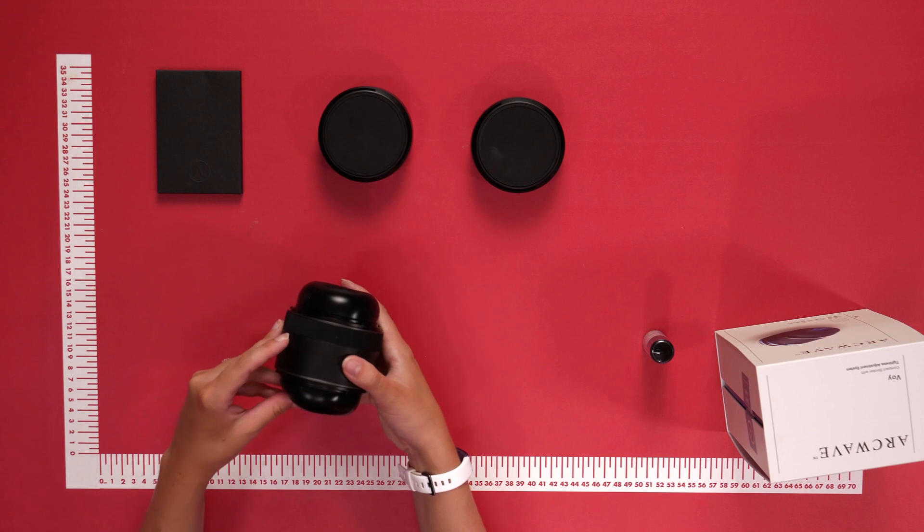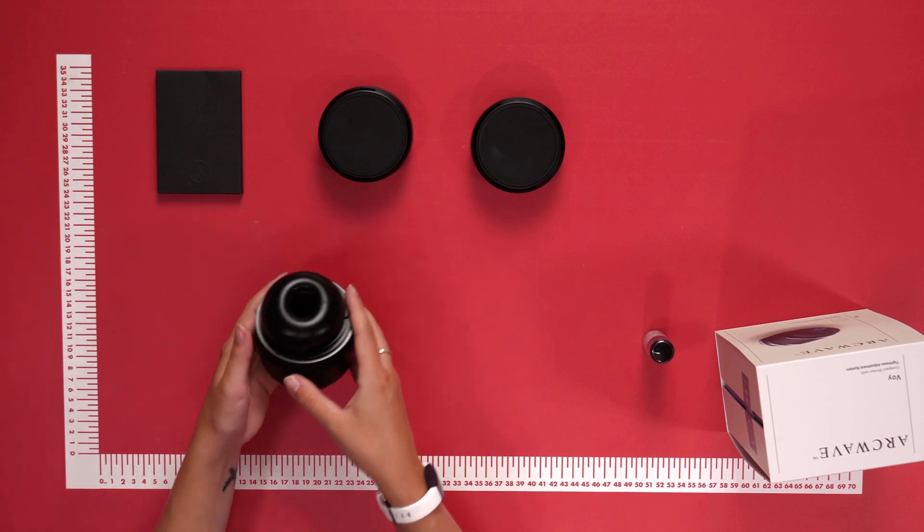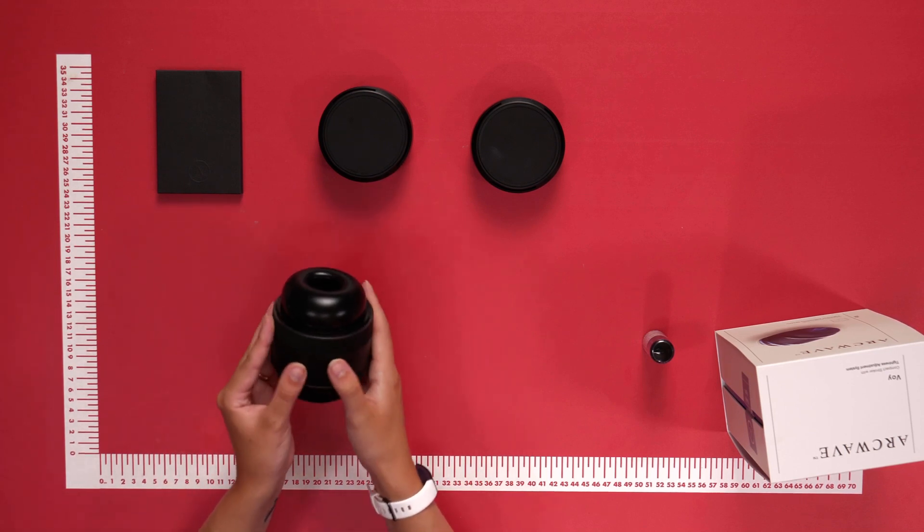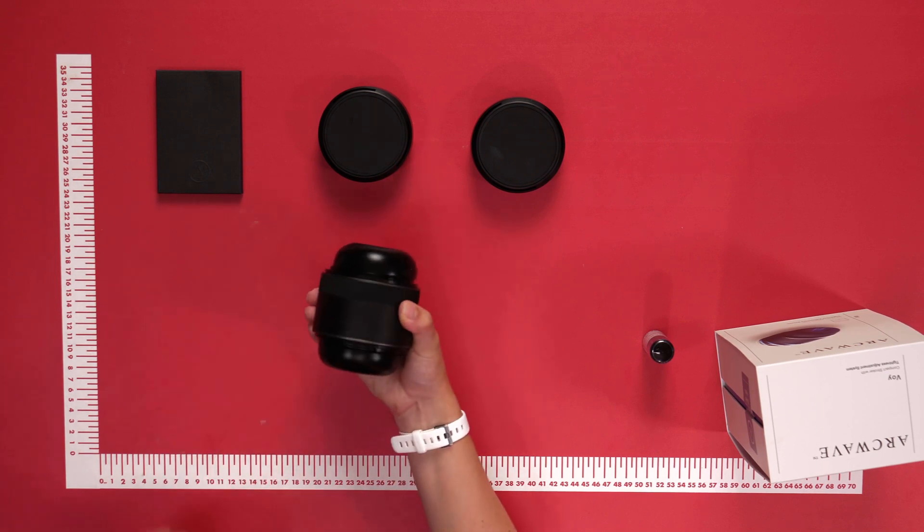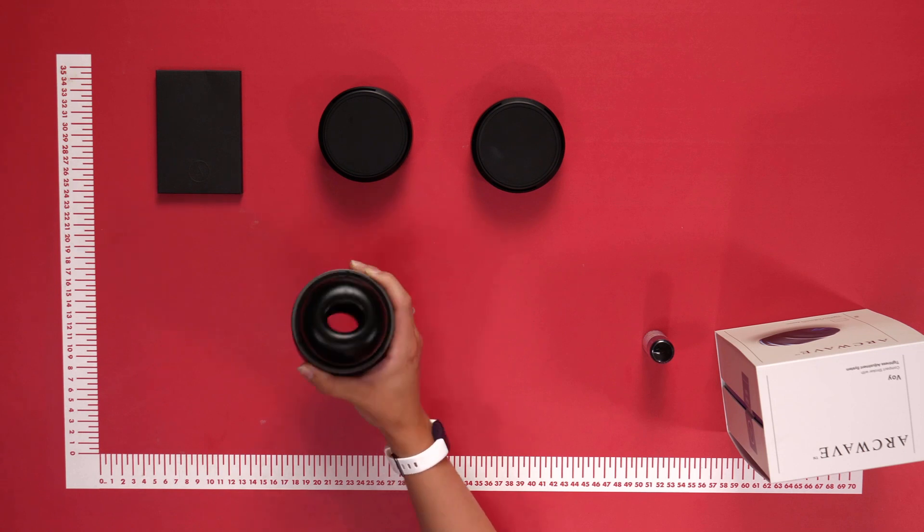There are eight different levels to choose from and you can use this even in the bath or shower because it's completely waterproof. Thanks to its ergonomic shape and compact size, the Boy fits in the palm of your hand and is easy to carry around.